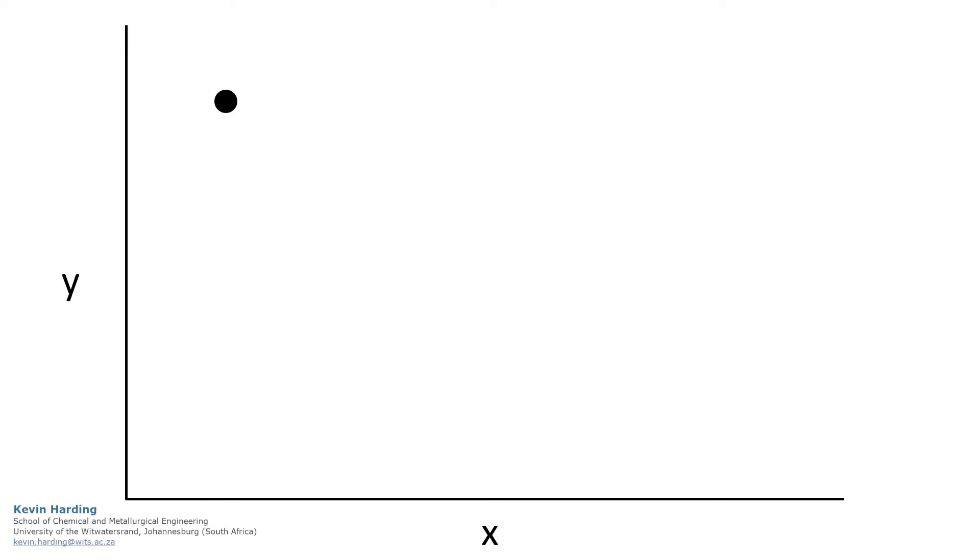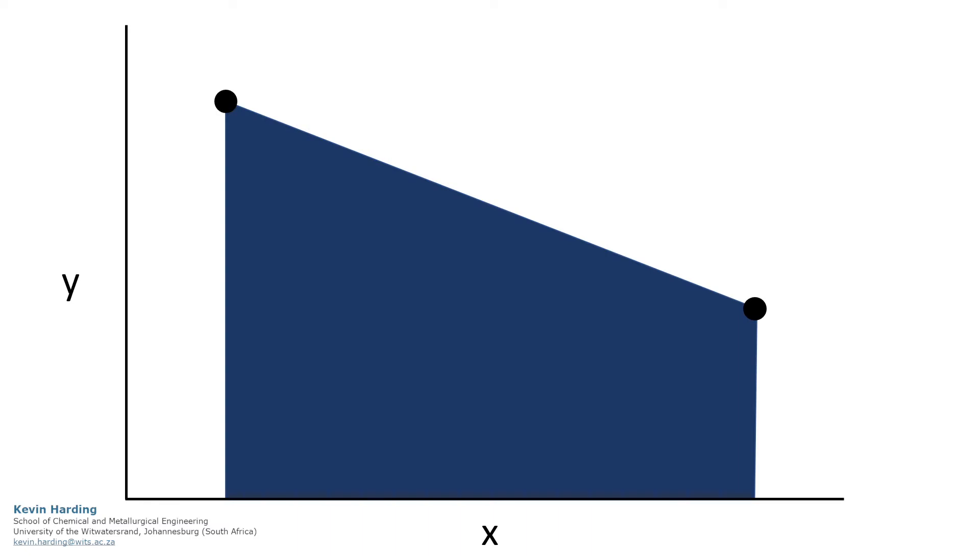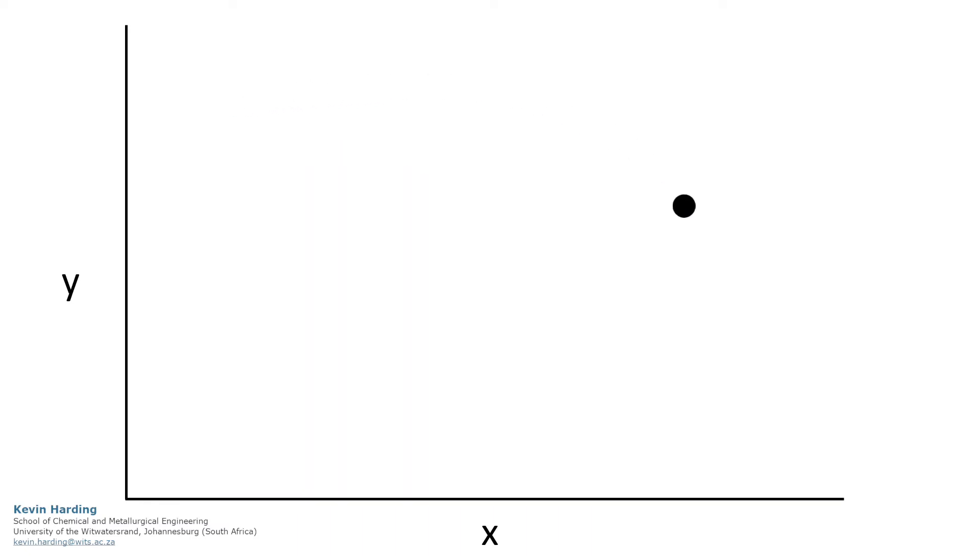Does it matter which route we take in changing a variable from A to B? It is obvious that in some instances the answer is no, because the final point is the same no matter how we arrived there.